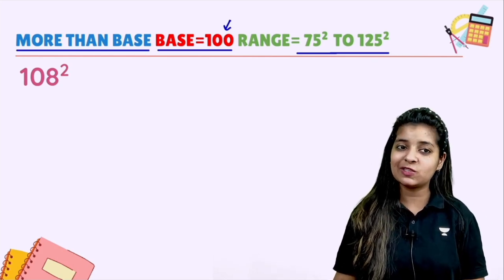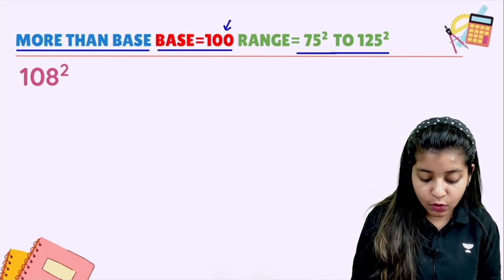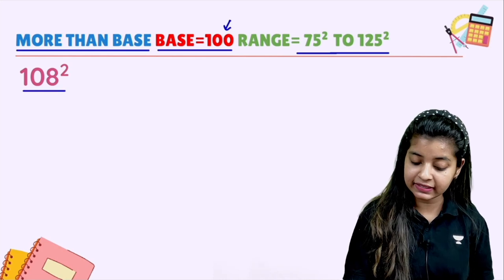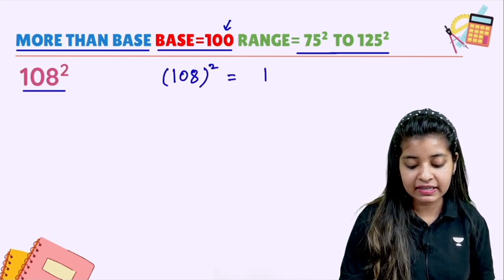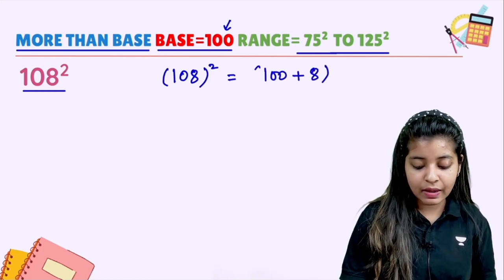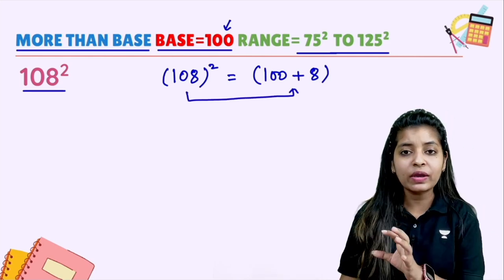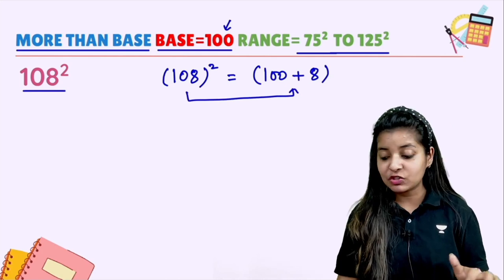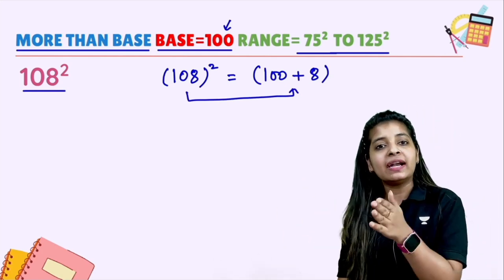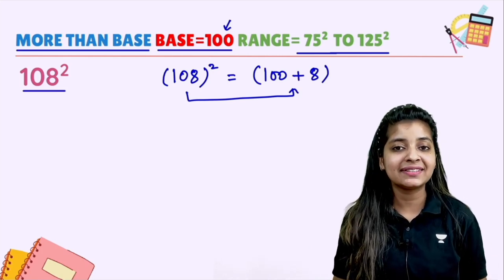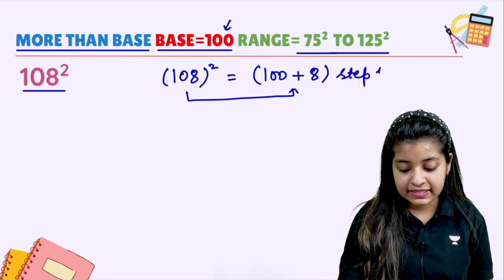Let's see how we can find the square of 108. Our base is 100. So how can we write 108 squared? We can write it as 100 plus 8. We have broken 108 into 100 plus 8. This is your Step 1.